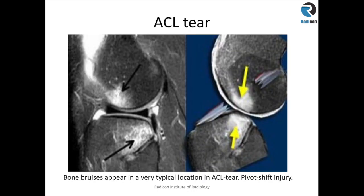Normally the mechanism of injury is a pivot shift injury, resulting from posterior impaction of the femoral condyle onto the lateral tibial condyle. You get a classic edema pattern in the femoral condyle anteriorly and the posterior margin of the lateral tibial condyle. This pattern immediately indicates a pivot shift injury, and ACL injury should be highly suspected and commented upon.